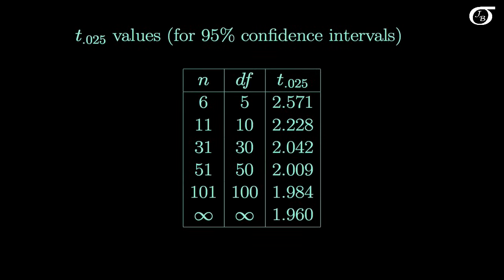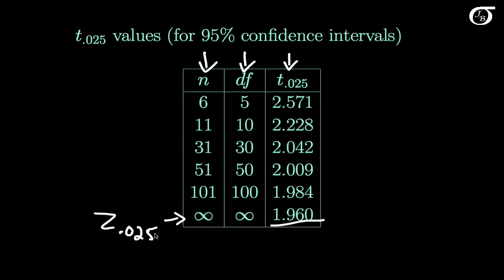Here I have a table with the appropriate t value for various degrees of freedom. The first column has the sample size n, the second has the degrees of freedom (n minus 1), and then the appropriate t value for a 95% confidence interval. At infinite degrees of freedom we get z = 1.96, because a t-distribution with infinite degrees of freedom is the same as the standard normal. But at 5 degrees of freedom the t value is 2.571 — quite a bit bigger than 1.96. As the degrees of freedom increase, these t values get closer and closer to 1.96.